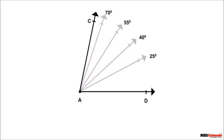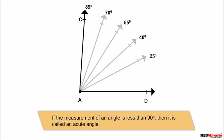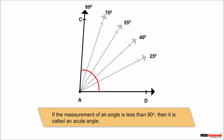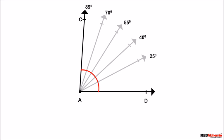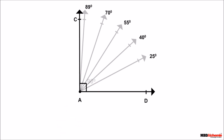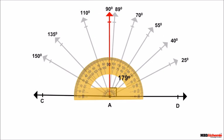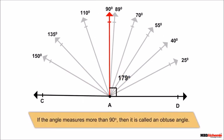If I move up this ray to 90 degrees, the measurement of the angle is equal to 90 degrees, and it is called a right angle. If I move up this ray further to 179 degrees, the angle measures more than 90 degrees, and it is called an obtuse angle.